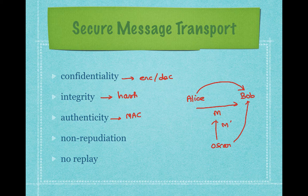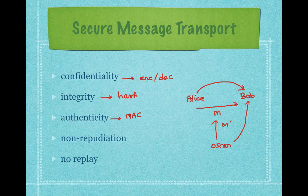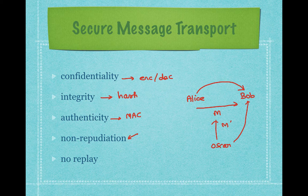The fourth property is called non-repudiation. Non-repudiation means after Alice sends a message to Bob, Alice cannot later say 'I did not send the message.' The sender cannot deny that they sent the message. Typically we achieve non-repudiation using what is called public key cryptography and digital signatures. When we deal with public key cryptography, I will explain all these things.